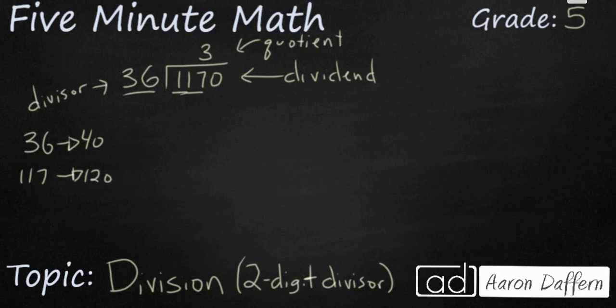And you notice I put the 3 in the quotient above the 7 because 36 goes into 117. Now, off to the side, I need to figure out what 36 times 3 is. And so that's going to be 8, that's 9, that's 108. So let's put our 108 underneath our 117. We're ignoring the zero right there for a moment.